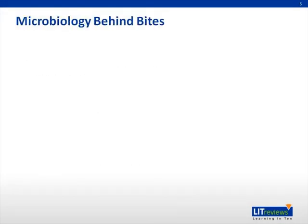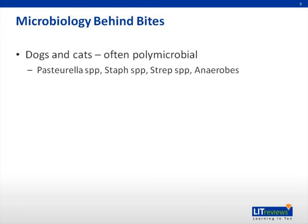The microbiology behind mammalian bites is often complex, with wound cultures in dog and cat bites often being polymicrobial. Some specific pathogens seen in isolates include Pasteurella species, Staph species, Strep species, and anaerobes.